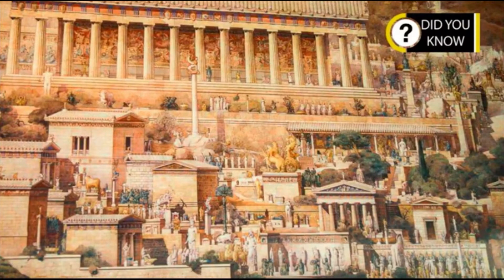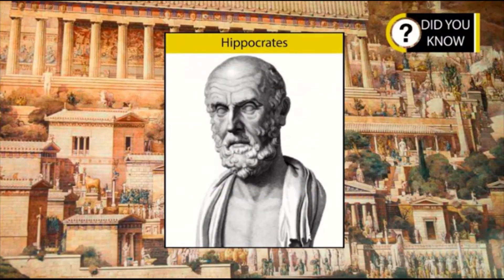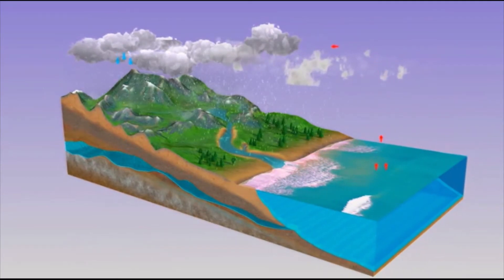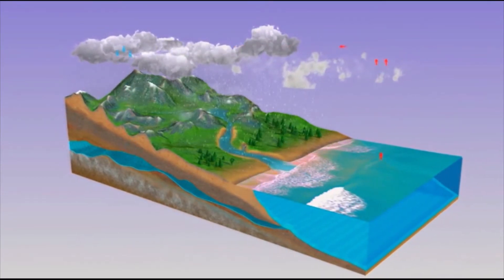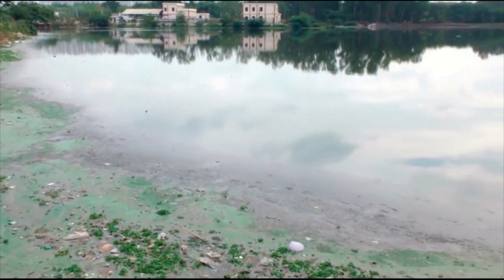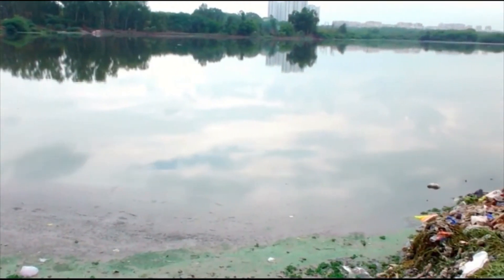Did you know even the ancient Greeks were aware of the risks of water contamination? Hippocrates, the father of medicine, advised them to boil and strain water before drinking it. Water is a renewable resource, so why are we facing water shortages? Overuse and pollution have made a large portion of available water unfit for use.